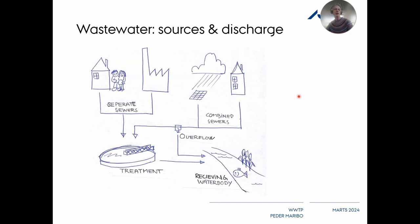Another thing to look into is what kind of sewer system we've got. The main difference is whether we have separate sewers or combined sewers including stormwater. From a combined sewer system, first of all we have overflow structures to minimize the peak hydraulic load at the treatment plant, but in any case there will be a considerably bigger difference from dry weather flow to peak flow in a combined sewered area. That is an important issue.